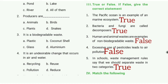4th one: excessive use of pesticide leads to air pollution. The answer is false. 5th one: in schools, waste management rules say that we should separate waste into two categories. The answer is true.